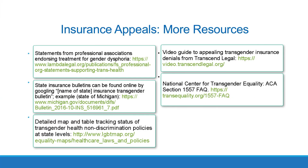Insurance appeals — more resources. 1. Statements from professional associations endorsing treatment for gender dysphoria is available from Landa Legal at the provided link. 2. State insurance bulletins can be found online by Googling the name of the state plus 'Insurance Transgender Bulletin' — here's an example for the state of Michigan. 3. A detailed map and table tracking the status of transgender health nondiscrimination policies at the state level is available from the Movement Advancement Project. 4. A video guide to appealing transgender insurance denials from Transcend Legal is available at the provided link. 5. The National Center for Transgender Equality has provided an FAQ about ACA Section 1557, the Non-Discrimination Section.